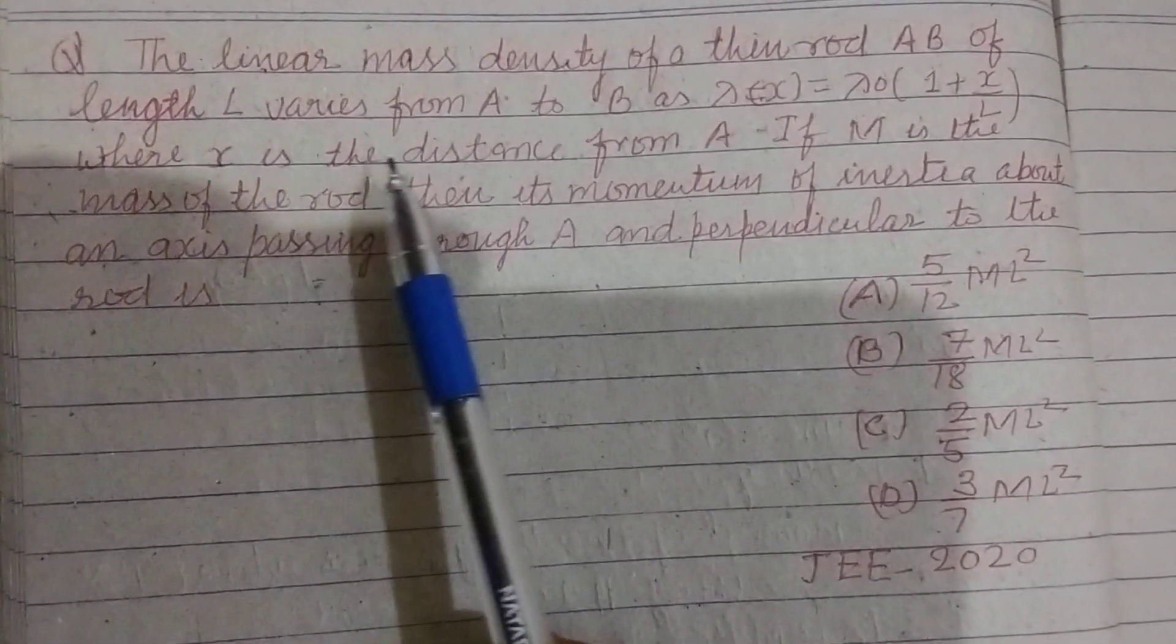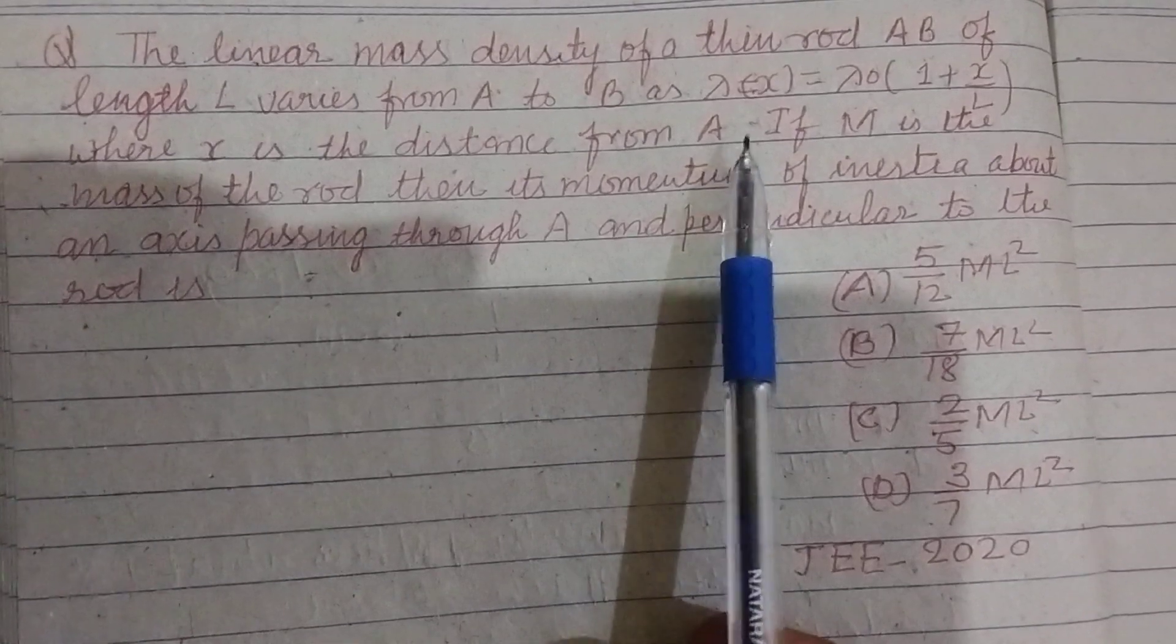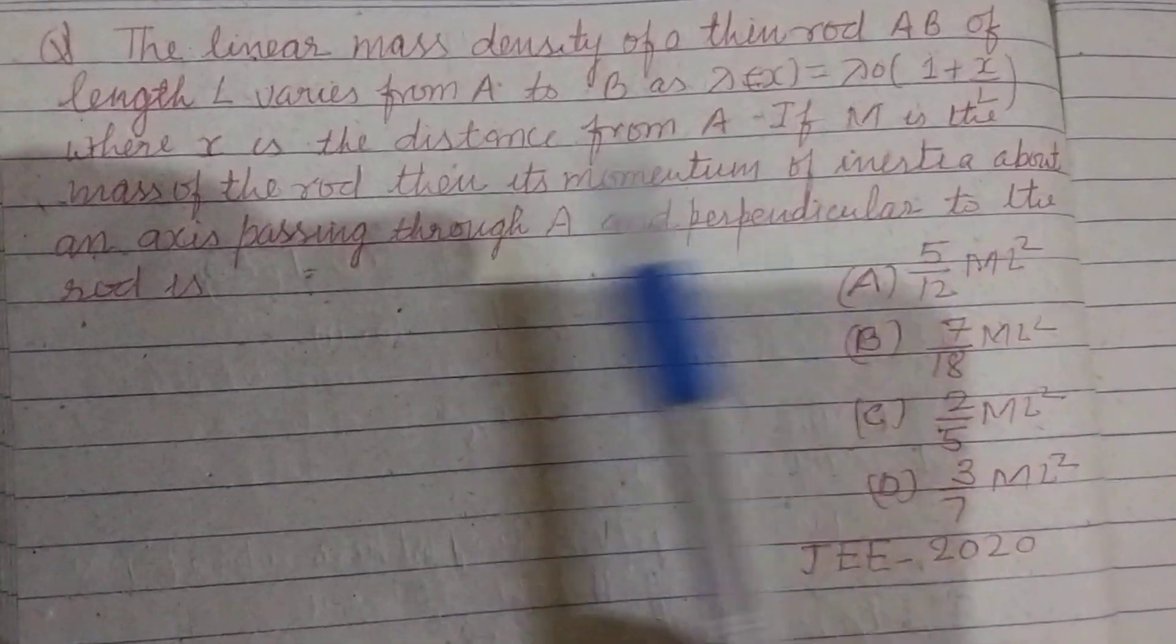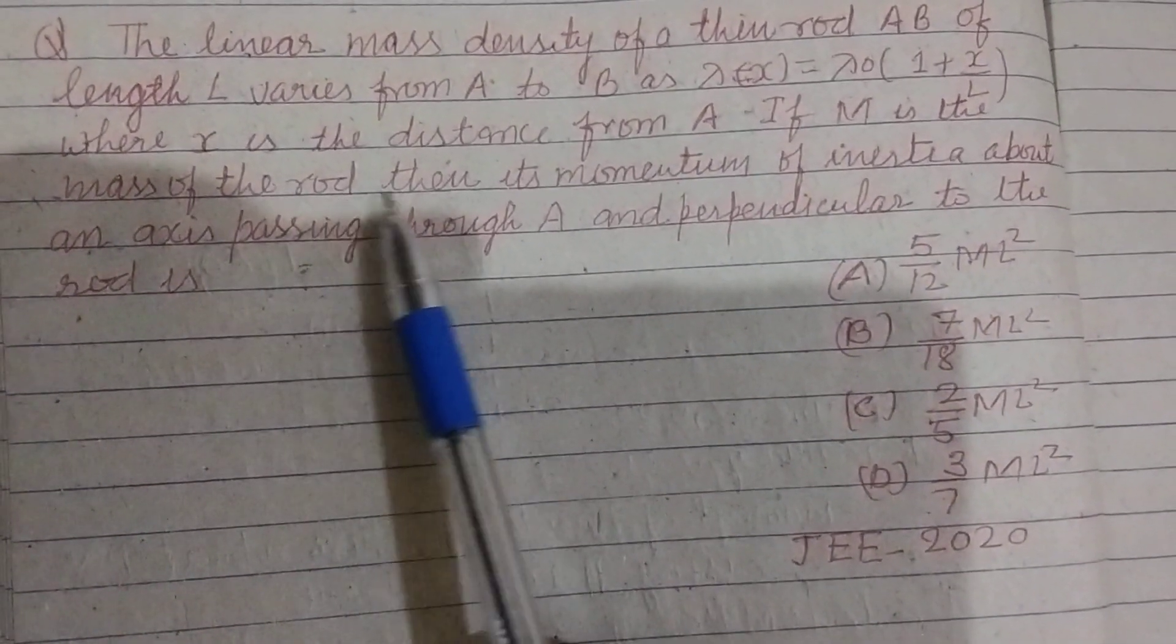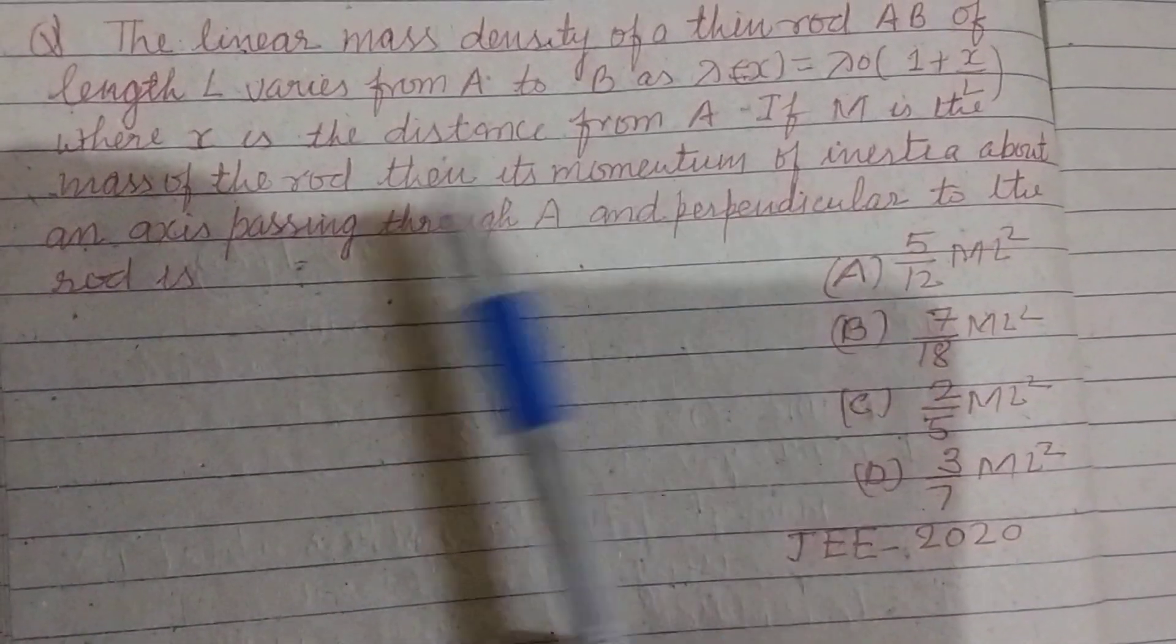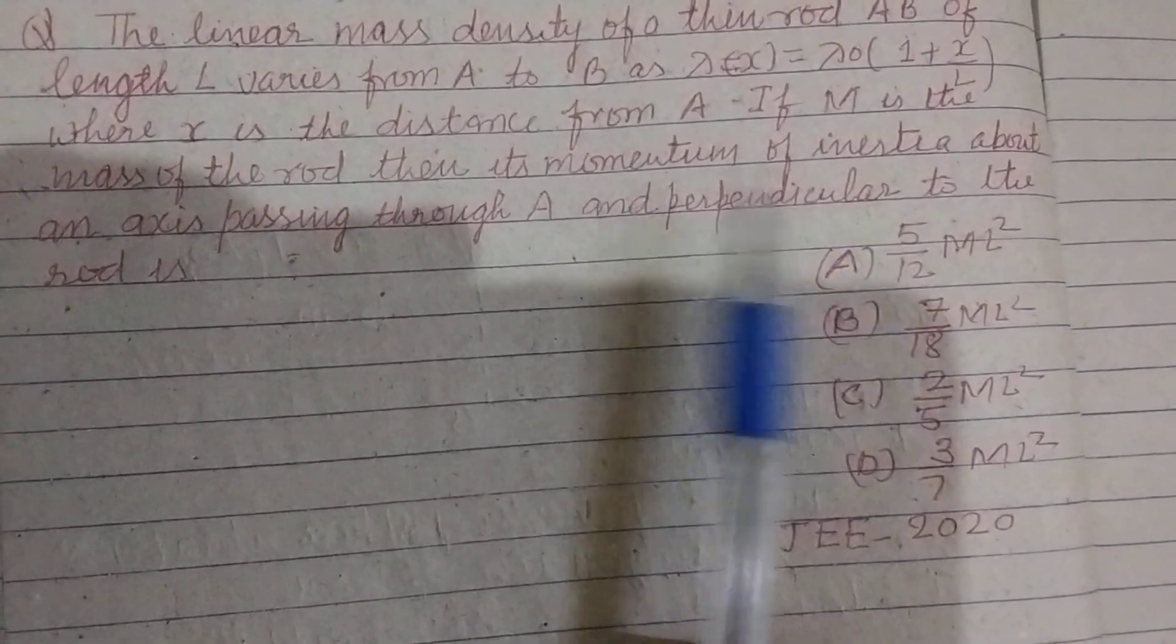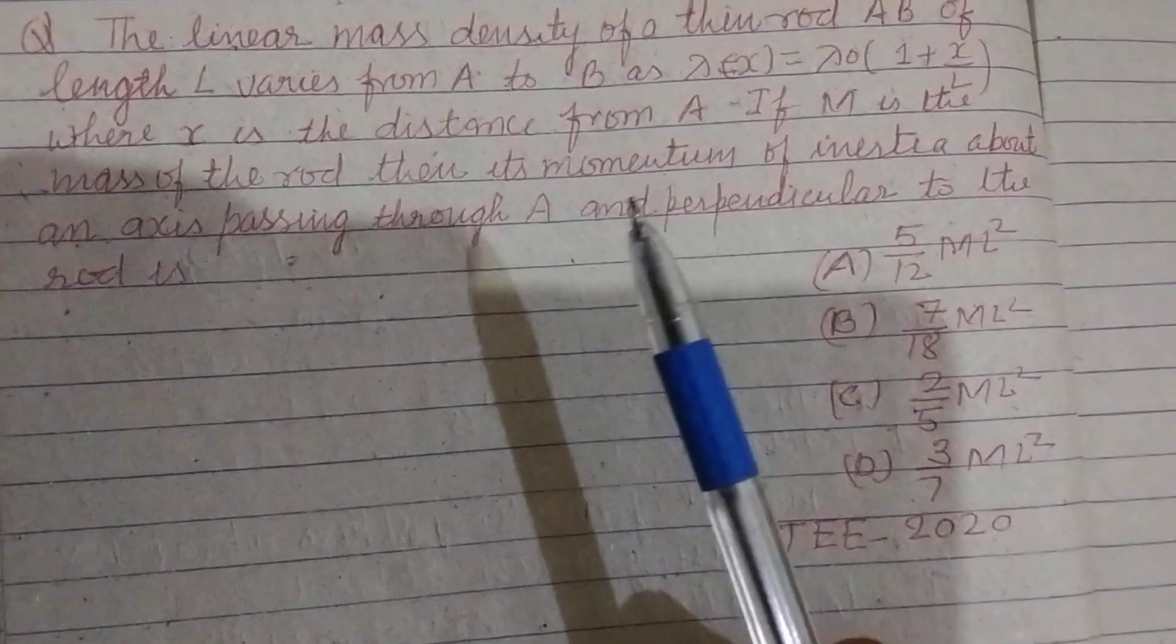If M is the mass of the rod, then its moment of inertia about the axis passing through A and perpendicular to the axis of the rod is.